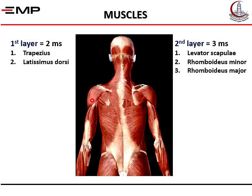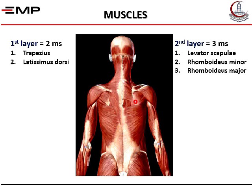In the first layer, we have two big triangular muscles. The first one is the trapezius, in the upper half of the back, and the second one is the latissimus dorsi, in the lower part of the back. To the right, we have the three deep muscles. They extend from the vertebral column to the medial border of the scapula. The first one is called levator scapulae, the second is rhomboidus minor, and the third is rhomboidus major.